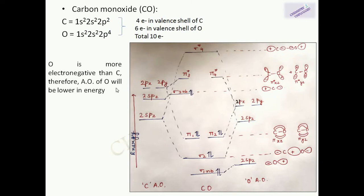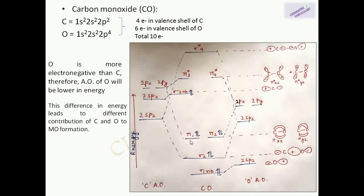Because oxygen is more electronegative than carbon, the atomic orbitals of oxygen will be lower in energy. The atom which is more electronegative has atomic orbitals that are lower in energy. So in the case of carbon monoxide, the atomic orbitals of oxygen will be lower in energy.